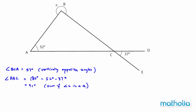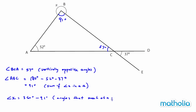So this angle is 37 degrees, and this angle is 91 degrees. Angle X will be 360 degrees minus 91 degrees. Reason: angles that meet at a point.